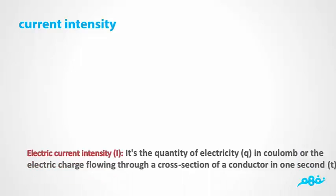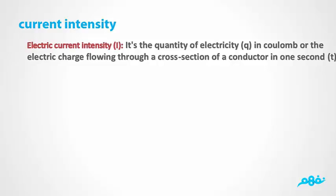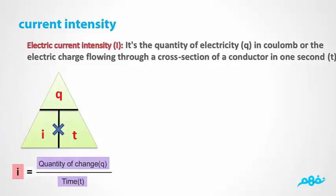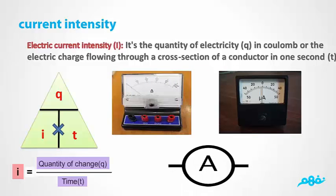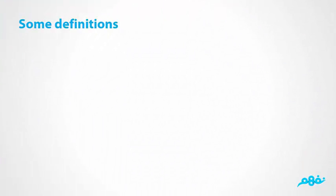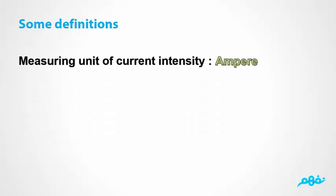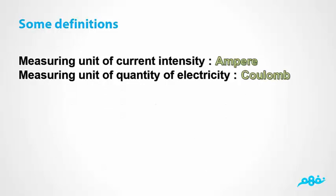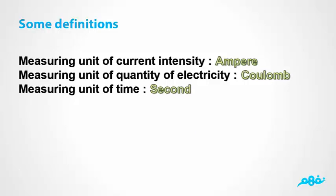Current intensity: The intensity of current isn't determined by the number of electrons, but by the rate of the flow of electrons through a specific point in the wire. The electric current intensity is the quantity of electric charges passing through a cross section of the conductor in one second. Current intensity equals quantity of charges over time: I equals Q over T. It is measured using a device called an ammeter, with symbol A, connected in series. The measuring unit of current intensity is ampere; the measuring unit of quantity of electricity is coulomb; the measuring unit of time is second.